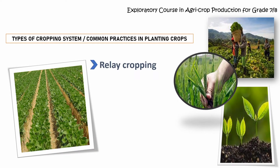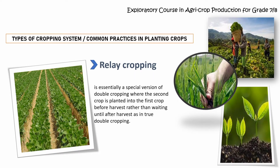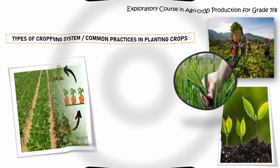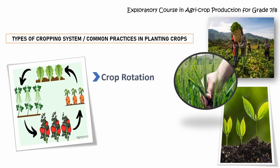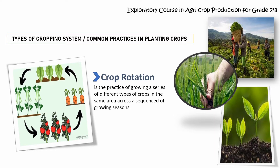Next, we have Relay Cropping. It is essentially a special version of double cropping where the second crop is planted into the first crop before harvest, rather than waiting until after harvest as in true double cropping. Next is Crop Rotation. It is the practice of growing a series of different types of crops in the same area across a sequence of growing seasons.